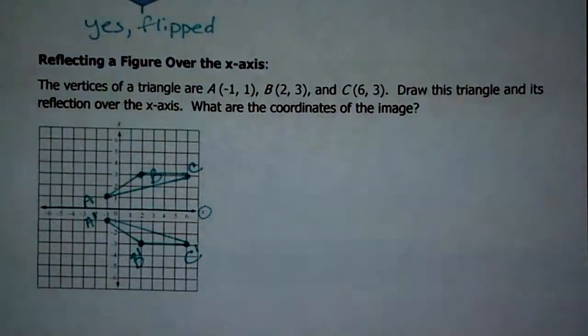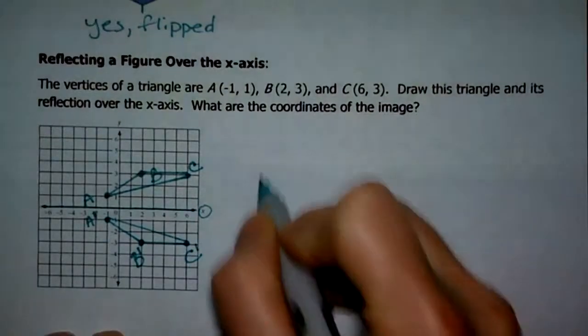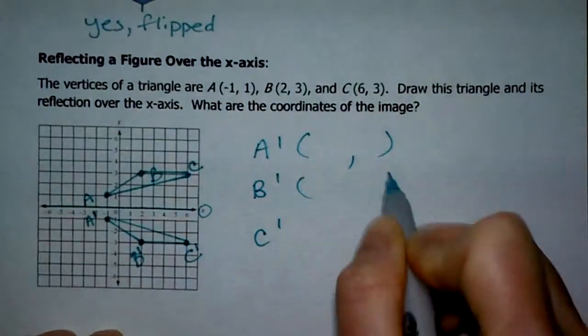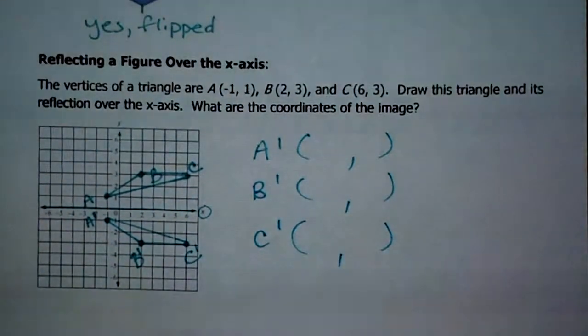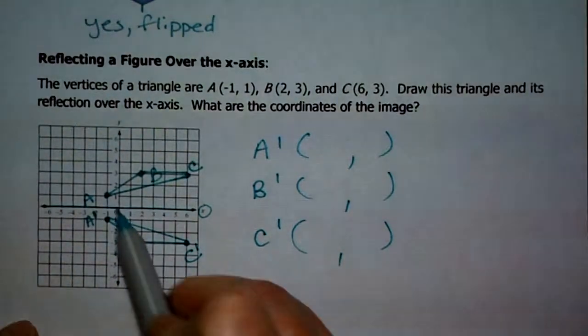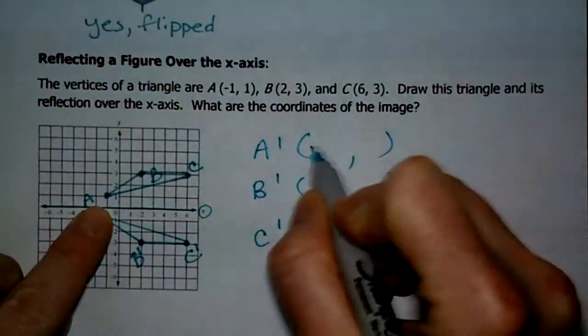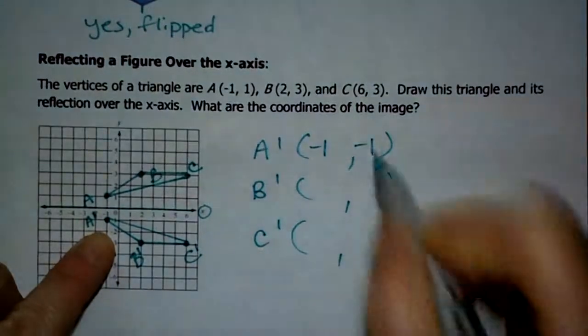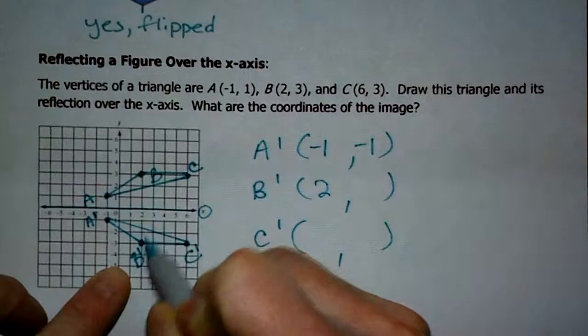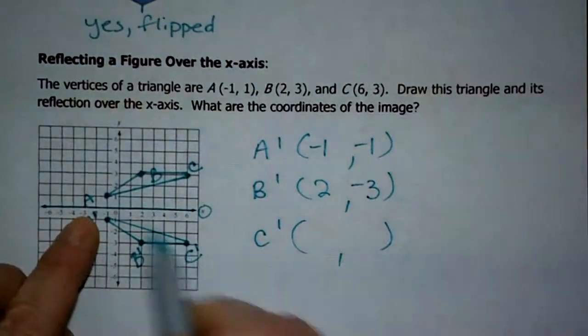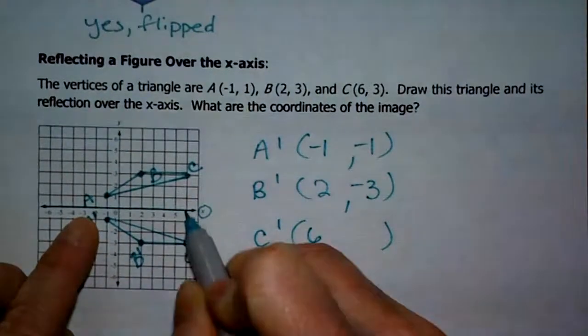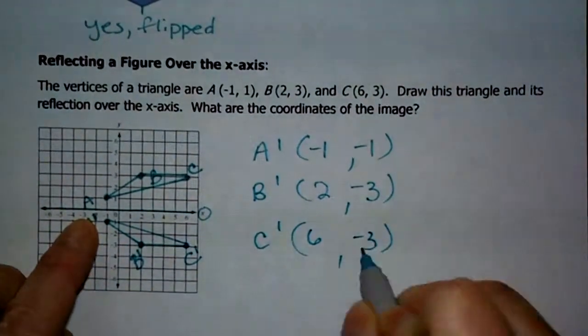So now it asks you, what are the coordinates of the image? Well, let's list those out. So we have A prime, B prime, C prime. To get to A, now I'm listing an ordered pair. So I start my counting from the origin. I have to go left one and down one. B is right two and down 1, 2, 3. And C is right 1, 2, 3, 4, 5, 6, and down 1, 2, 3.